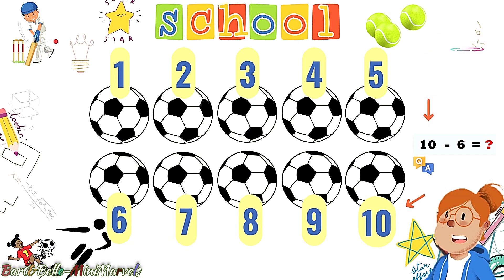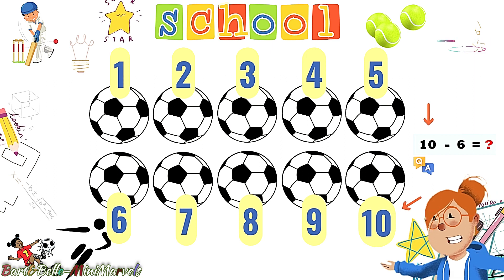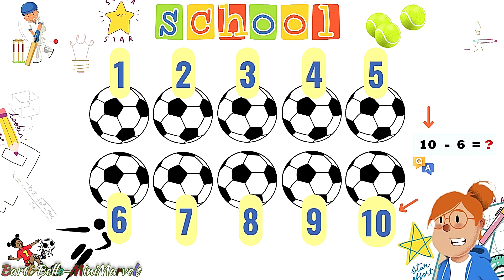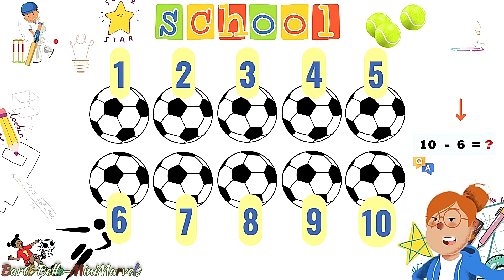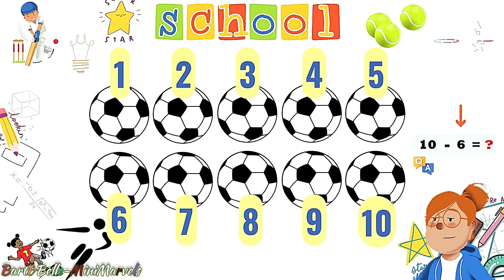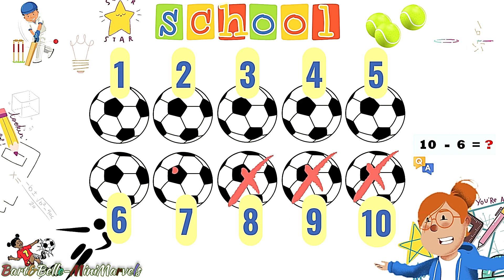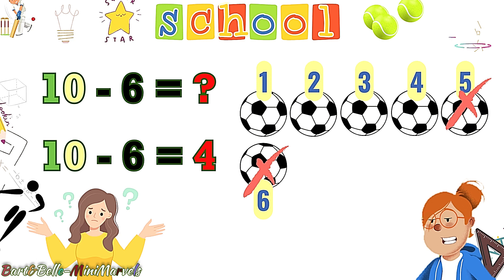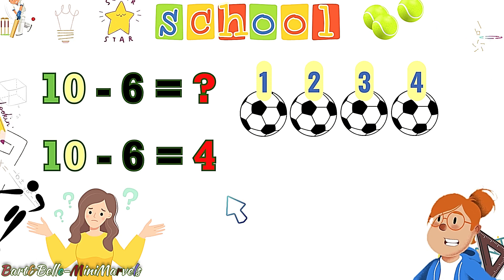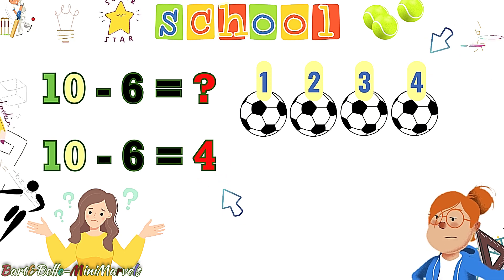To solve the question, let's put 10 footballs on the screen again. The 10 from the question determines the total number of footballs, and this 6 is showing the number we have to kick away to get the answer. We will simply kick 6 footballs. Let's do this! Yes! This way. Now let's count the remaining footballs: 1, 2, 3, and 4. We have solved another question.